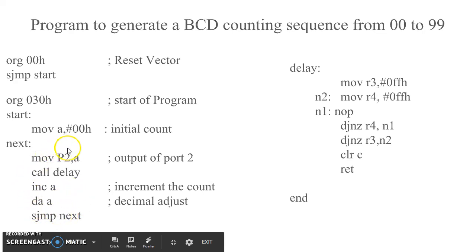Then there is an infinite loop which repeats the whole action of outputting the count, calling a delay routine, incrementing the count, and adjusting the decimal.